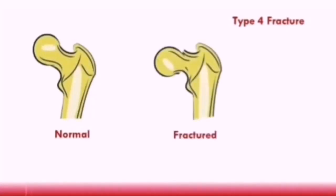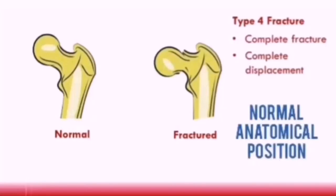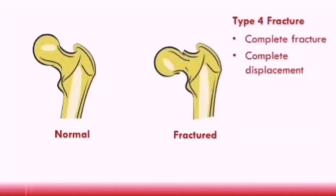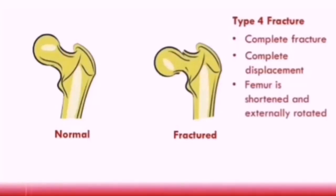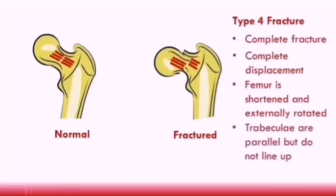A Garden's type 4 fracture involves a complete fracture with complete displacement. An important point is that the head of the femur remains in its normal anatomical position, articulating with the acetabulum normally, but the femur is shortened and externally rotated — this is when patients present with a shortened and externally rotated leg. The trabeculi remain parallel to each other but do not line up exactly because the femur is shortened. Type 4 Garden's fractures carry a high risk of avascular necrosis due to complete displacement.